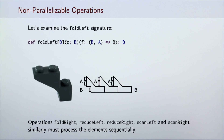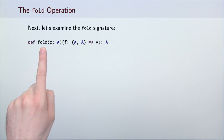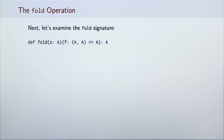Methods such as foldRight, reduceLeft, reduceRight, scanLeft, and scanRight also execute sequentially for the same reason. To enable folding the elements in parallel, we will have to introduce a new method called fold.